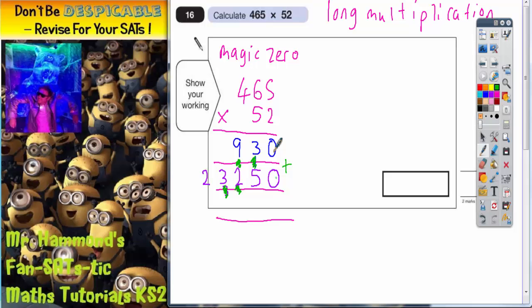So now we just need to add these two numbers together. So 0 plus 0 is 0. 3 plus 5 is 8. 9 plus 2 is 11, carry the 1. 3 plus 1 is 4. And then there's just 2 on the end, so that's 24,180. So the answer is 24,180.